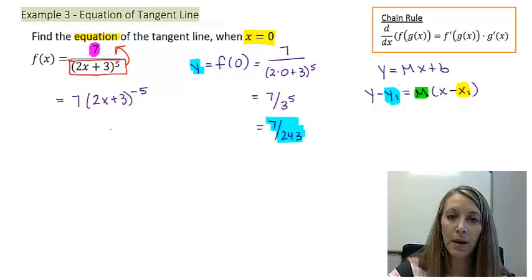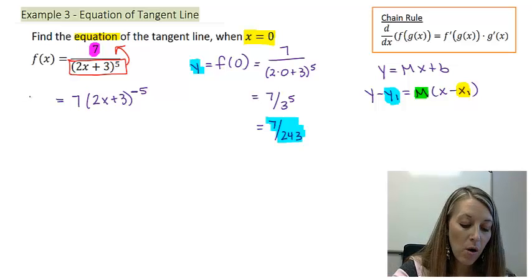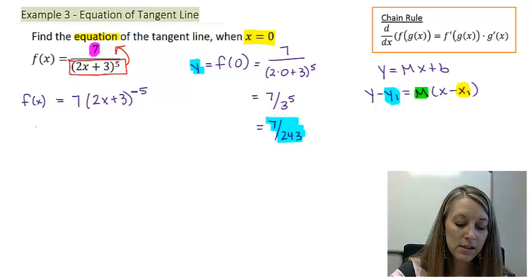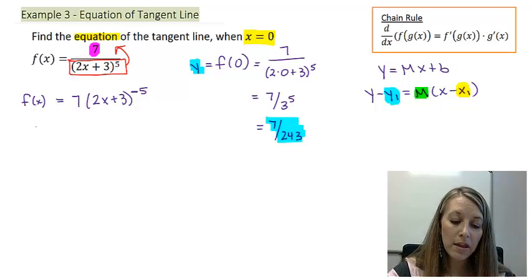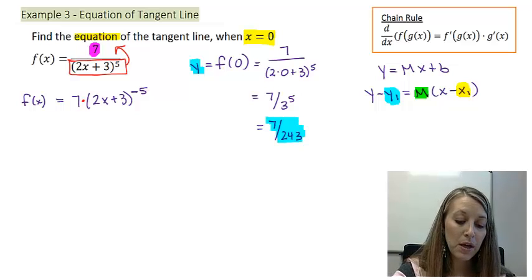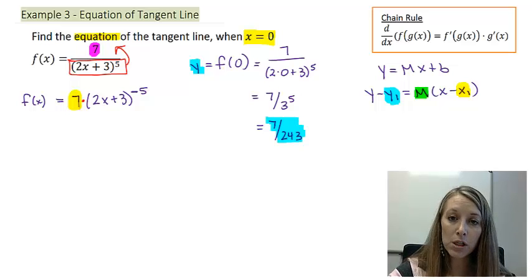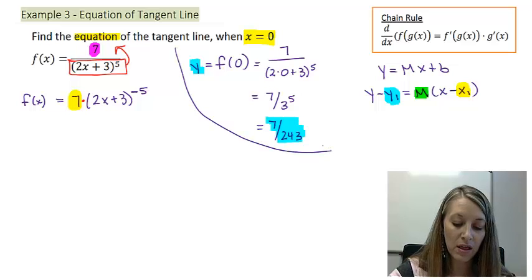Moving a term from denominator to numerator just negates the exponent. Now I don't need the quotient rule. You might think I'd still need a product rule since there's multiplication, but my product is just with a constant, so I use the constant multiple rule — I can simply pull the constant out to the side without using the product rule. Let's take the derivative in this format.